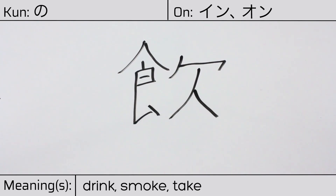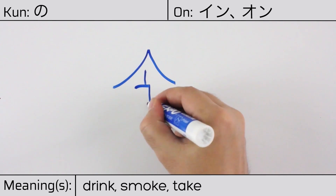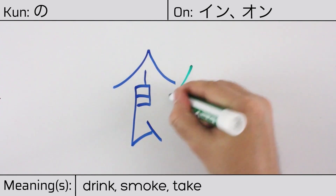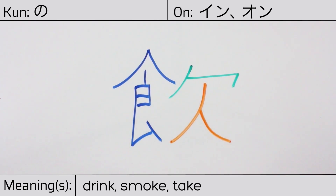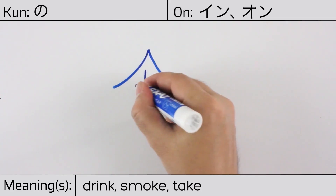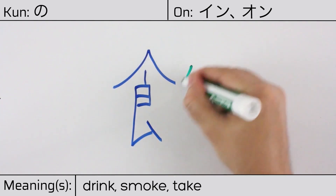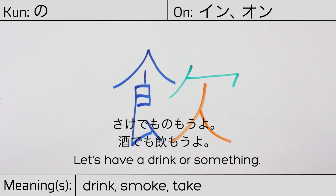This character is made up of the following radicals or parts: eat or food, shoku, on the left; a wrapping radical on the top right, similar to tutsumigamae; and finally hito or person on the bottom. This part on the right means to lack or yawn, and is the radical known as akubi. You can remember this kanji by the following hint: just as when one eats, one has to open one's mouth — or yawn — to drink. Our example sentence is: sake demo nomou yo — Let's have a drink or something.